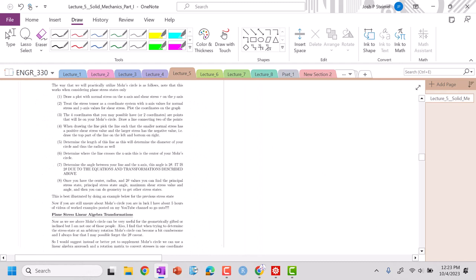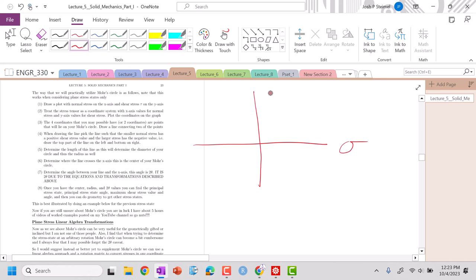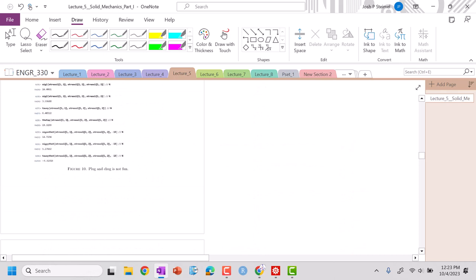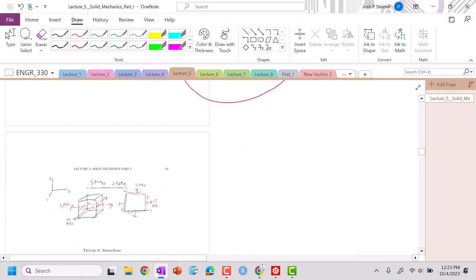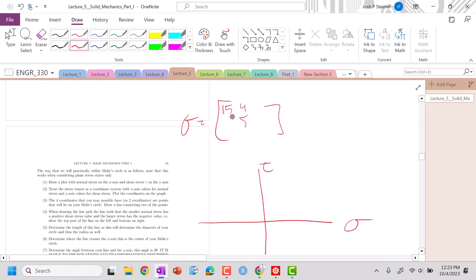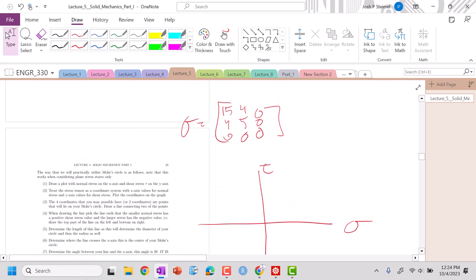So how do we do this? Well, we're going to plot our normal stress on the x-axis, our shear stress tau on the y-axis. We're going to use our tensor, which we're going to actually go ahead and write this out right here. What is it? I think it's like 15, 5, 4 on the sides. So our stress tensor is 15, 5, 4, 4, 0, 0, 0, 0, 0.